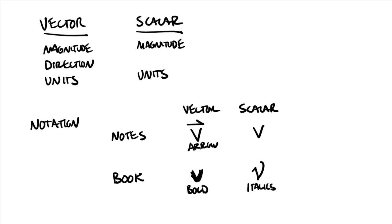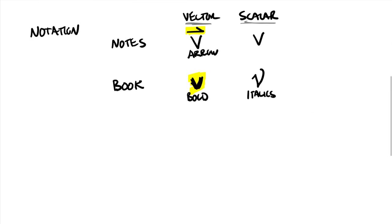The key things to look for: an arrow above it in your notes and a bold typeface in the book mean a vector. You're going to need to get pretty good this semester at indicating which terms are vectors and which are scalars — you will lose points if you don't differentiate, because there are many relationships that are true for vectors which may not be true for scalars.